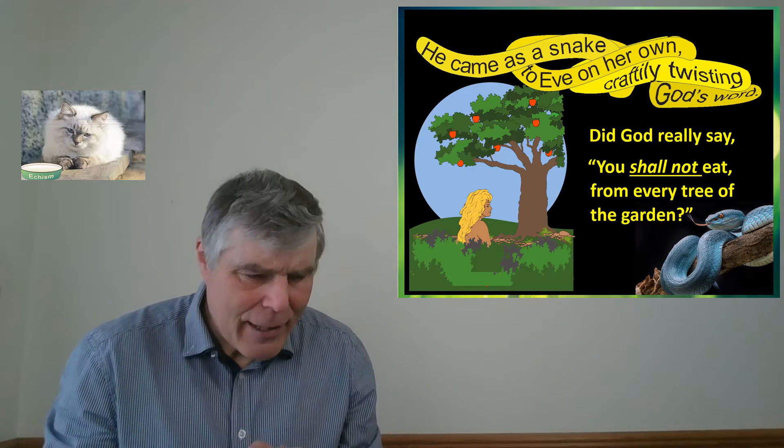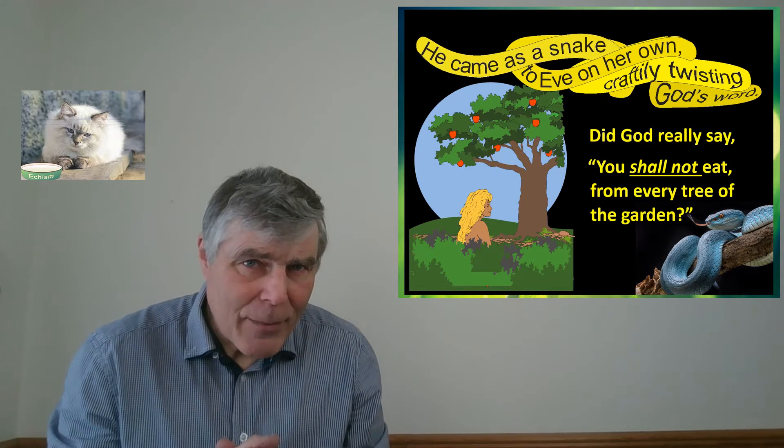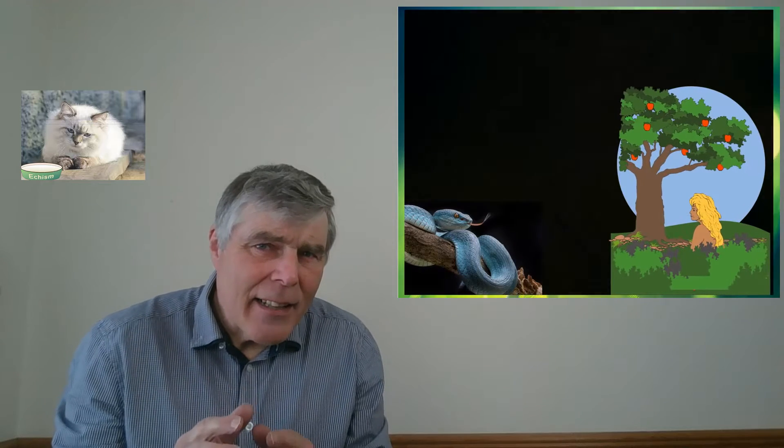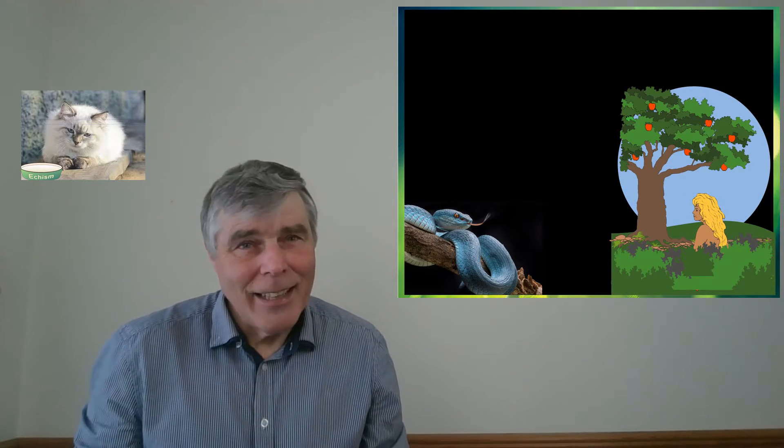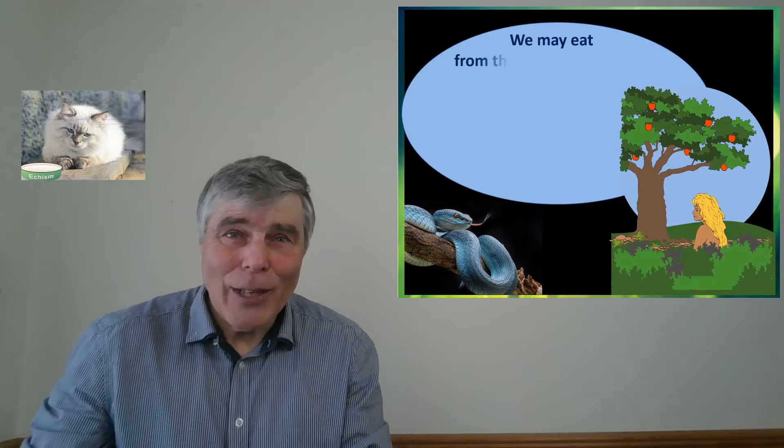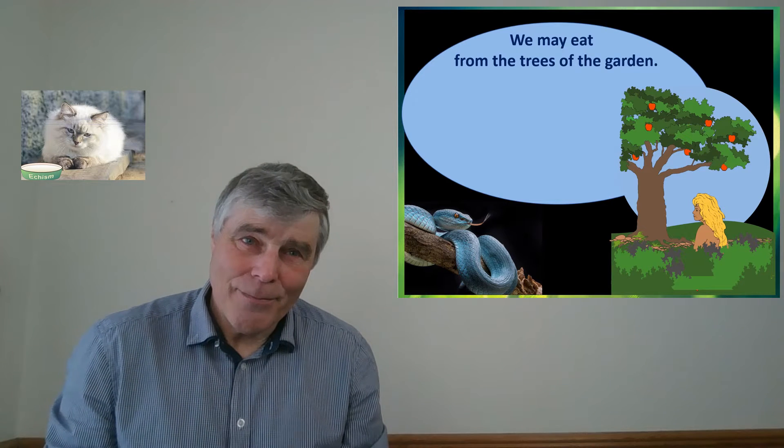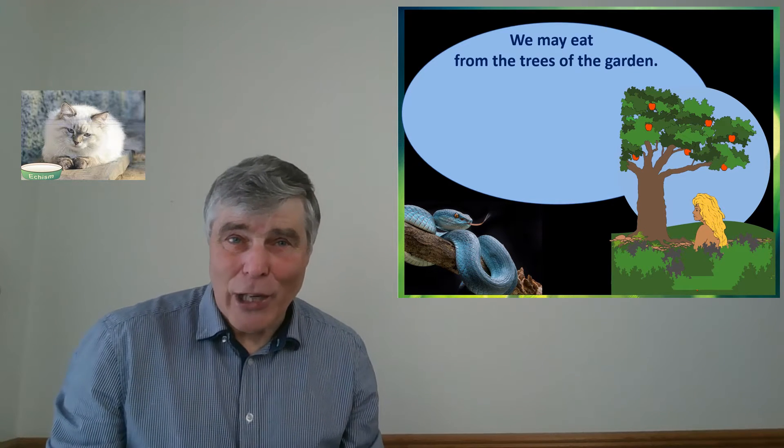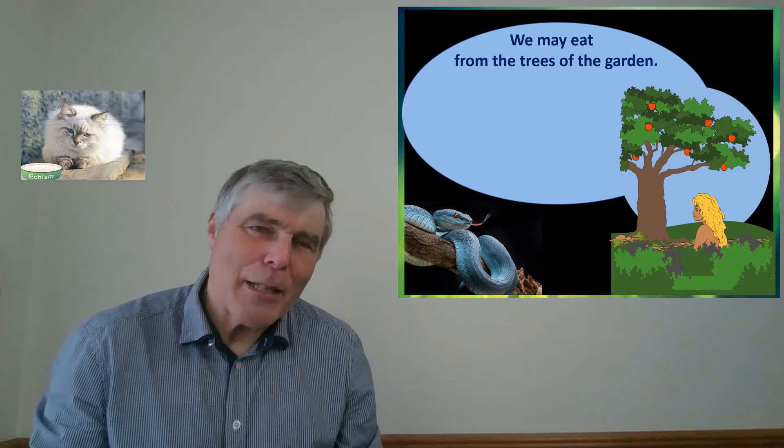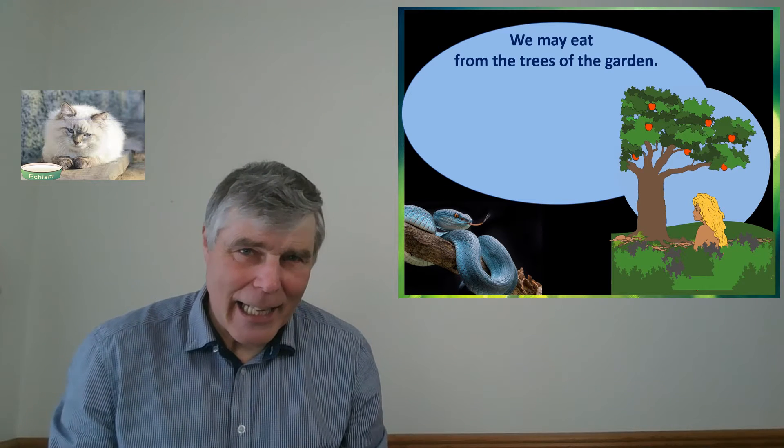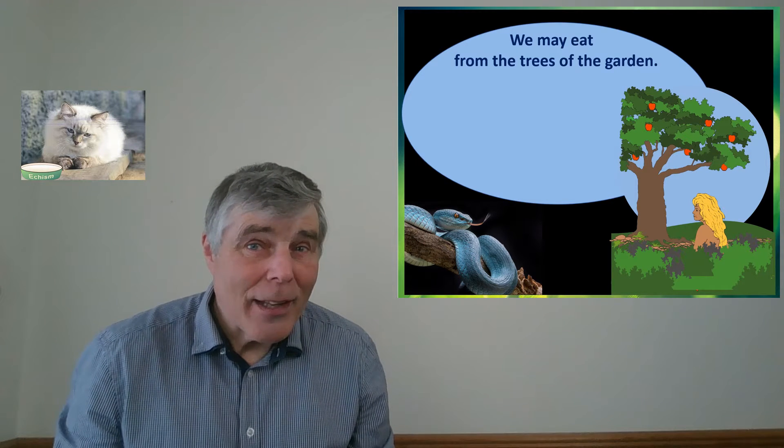Satan listened carefully to Eve's reply. He was listening for any signs that the anti-God seed thought was beginning to grow. Eve cheerfully answered him, we may eat from the trees of the garden. She thought God was wonderfully generous. Then to clear up the snake's obvious misunderstanding, Eve made it clear what God had said.